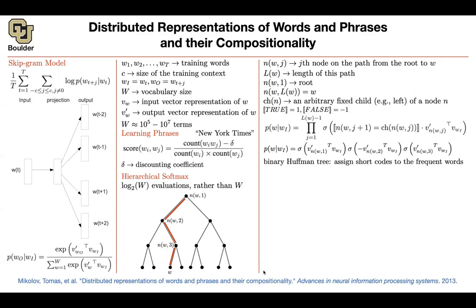You are trading computational efficiency for memory — you now store vector representations for each node. V-prime of N(W,1), V-prime of N(W,2), etc. are all learned parameters. They are initialized so everything has roughly even probability, and then updated according to the loss function. During backpropagation, only the vectors along the given path need to be updated — those get updated per backpropagation pass.